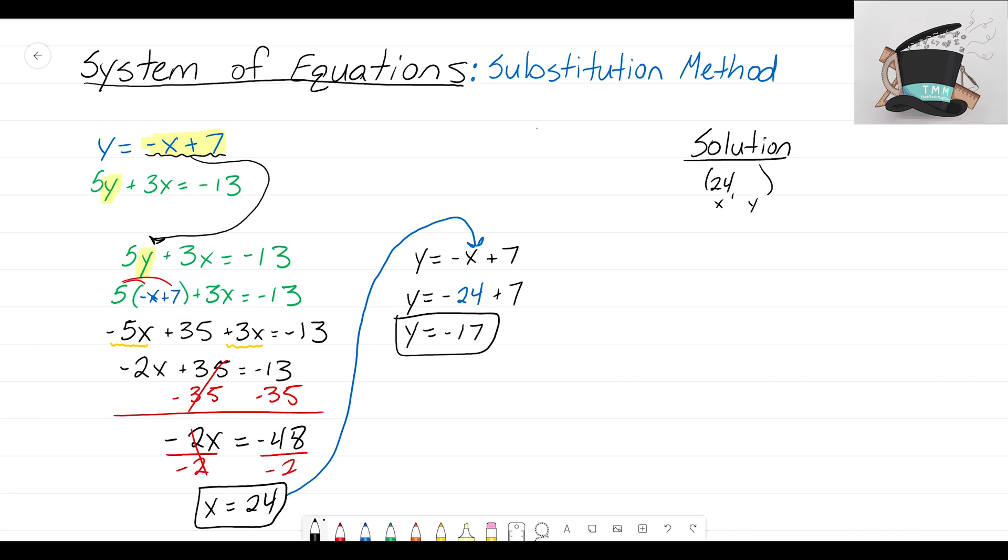That is our final y value for our solution. We now know that our solution is 24 comma negative 17.